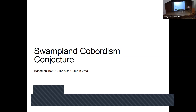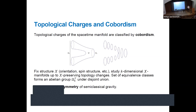Let's review the swampland cobordism conjecture. The first question is whether there are any topological charges associated to the space-time manifold. As I said, the space-time manifold is dynamical in quantum gravity, and as a dynamical degree of freedom it can carry conserved charges. The mathematically precise way to describe these charges is cobordism. If I have two manifolds of the same dimension, M1 and M2, I can ask whether there's a way to get from M1 to M2 by a sequence of dynamically allowed topology changes — forming a manifold of one dimension higher with incoming boundary M1 and outgoing boundary M2. This is known as a cobordism.